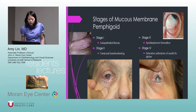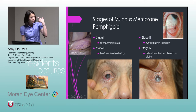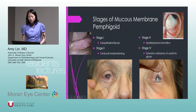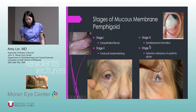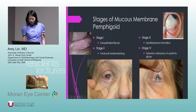The stages of mucous membrane pemphigoid: stage 1 is sub-epithelial fibrosis. Stage 2 is fornix foreshortening — pulling down the lid, you'll notice the fornix doesn't go down as far as normal due to scarring. Stage 3 is symblepharon formation. Stage 4 is extensive adhesions between the eyelid and globe. This patient is stage 4 — she has symblepharon, adhesions from her eyelid to the globe, and corneal scarring.